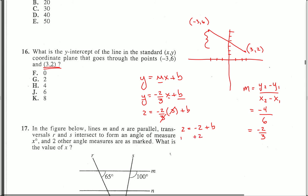If I add 2 to both sides, I see that my y-intercept is 4, letter choice H.